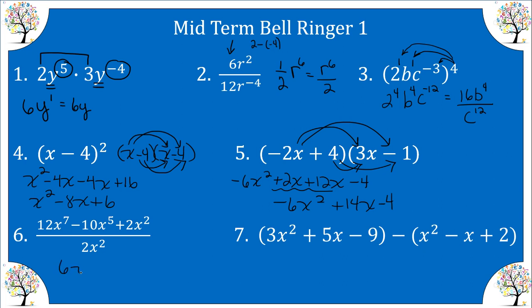we get six X to the fifth minus five X to the third plus, this is going to give me anything divided by self, is one. So we still have this trinomial.